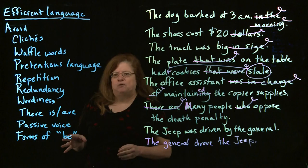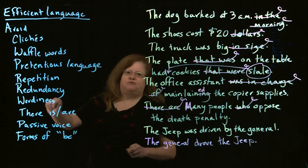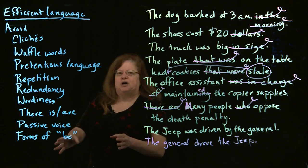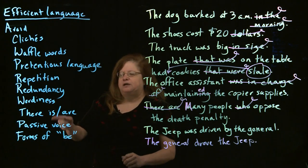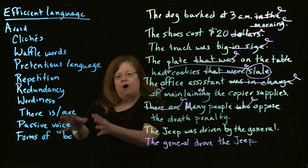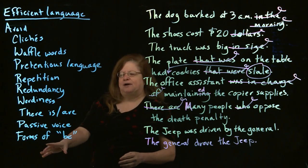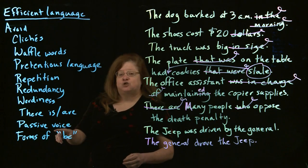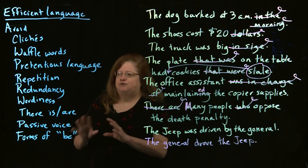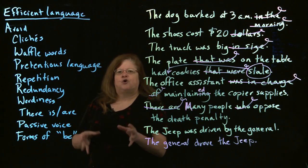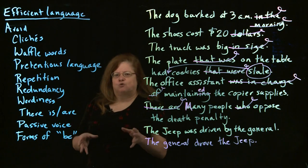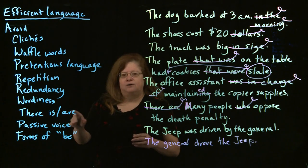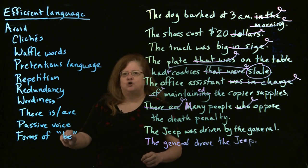This leads to an exercise you might want to try — it's really challenging, but really good. Take one of your own paragraphs and look through it for every single instance of 'be': is, am, was, were, are — all of those. Try to rewrite that paragraph without using a single form of 'be.' It's really hard. But if you can pull all the 'be' out of a paragraph, you're going to end up with a really tight, direct, efficient, effective paragraph.